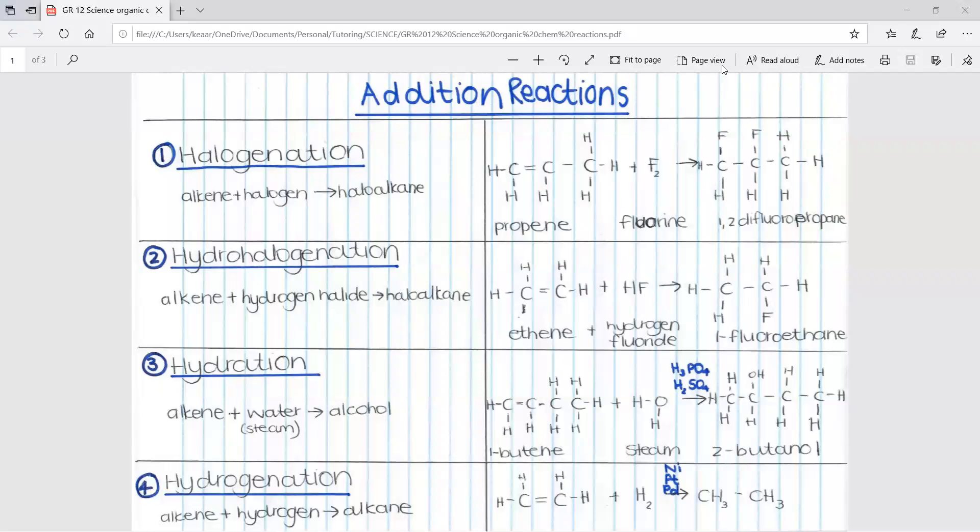This lesson is on the different types of organic chemistry reactions. They are broken down into three different types of reactions. The first is the addition reactions.